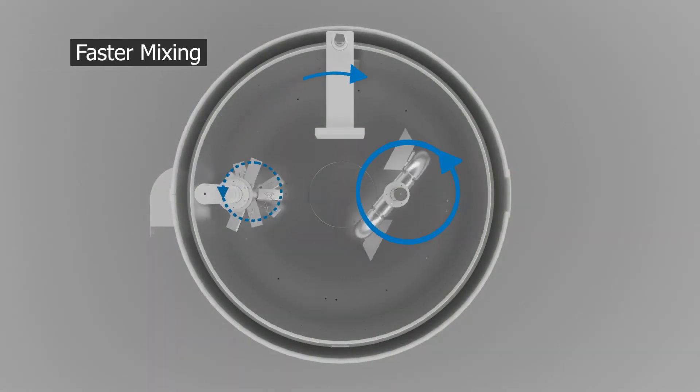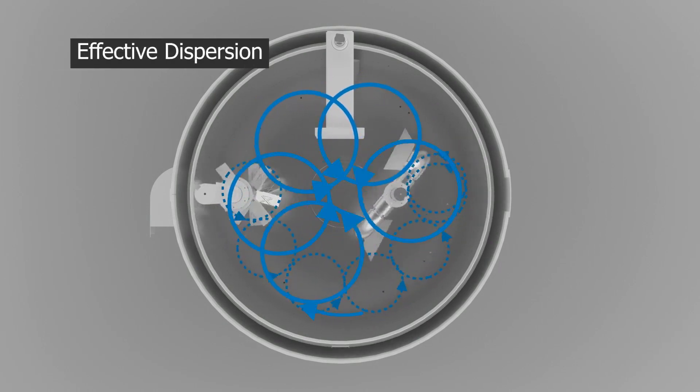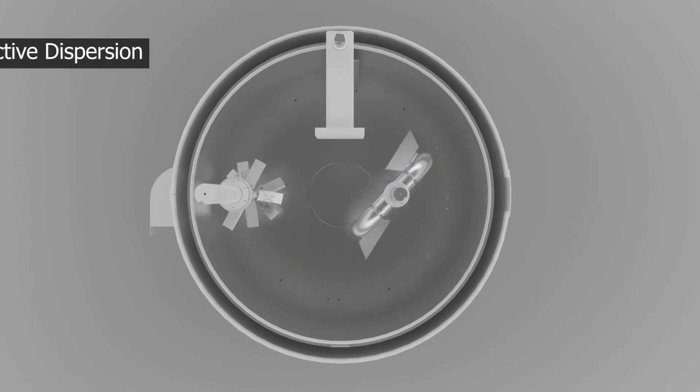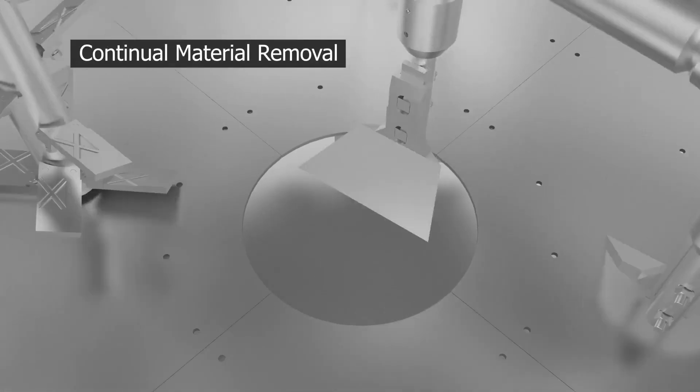A rotating pan, countered by a primary mixing rotor and secondary mixing plow, are strategically positioned in the mixer to deliver maximum material mixing.